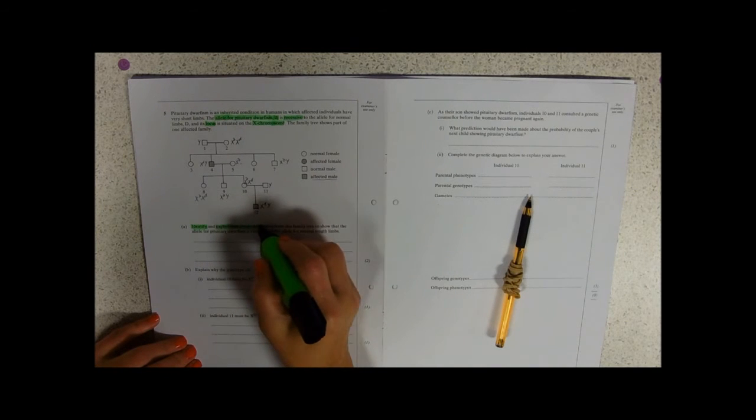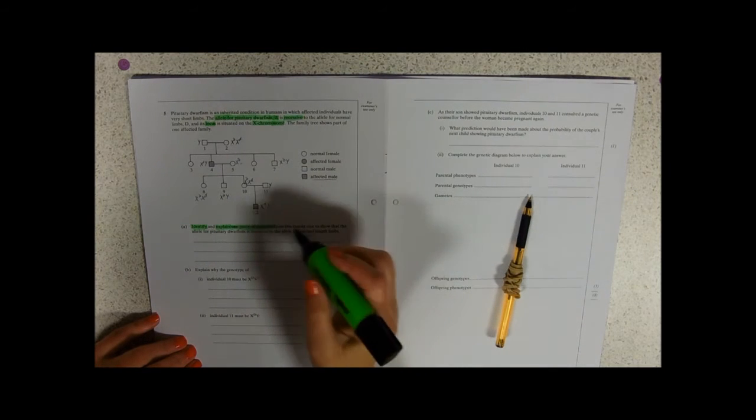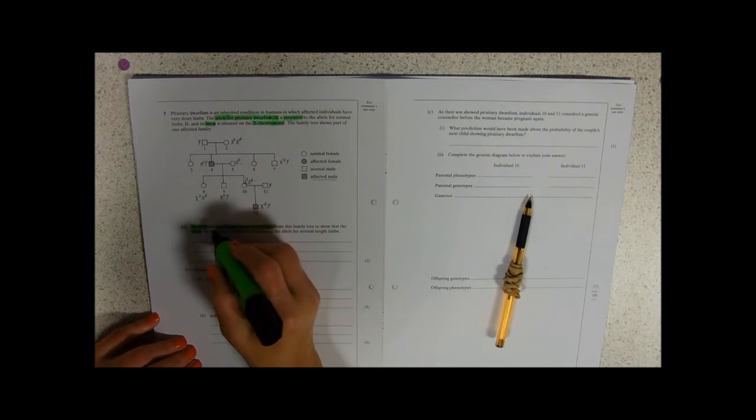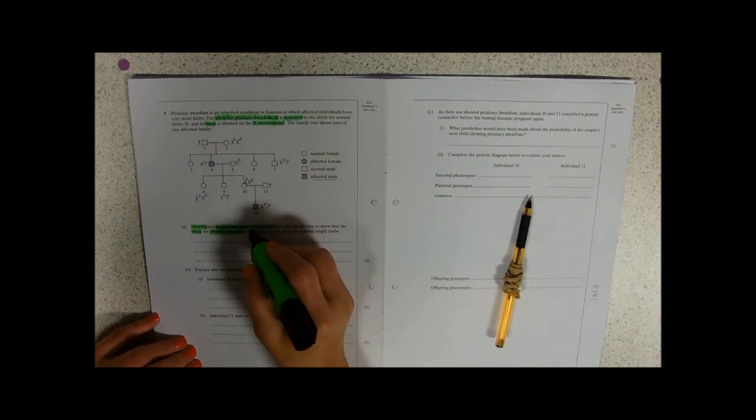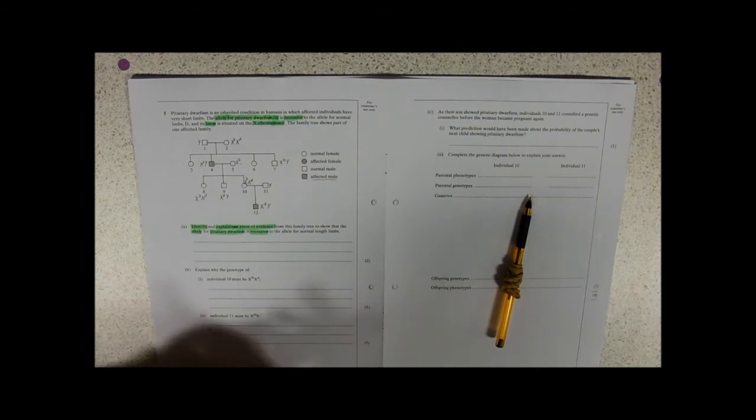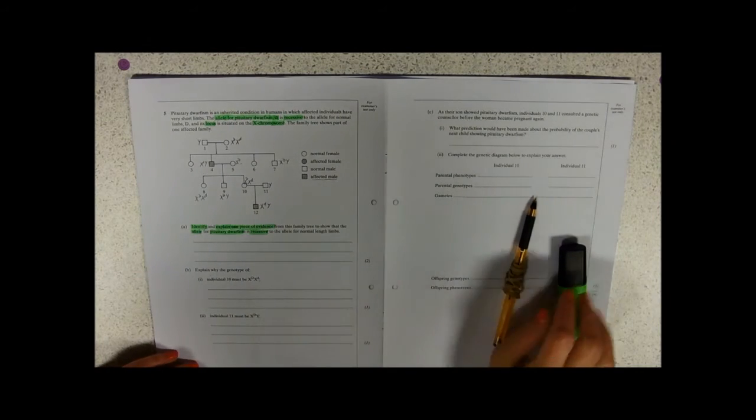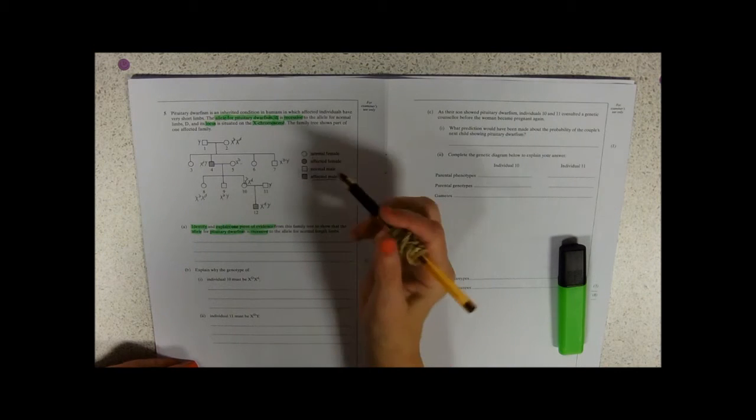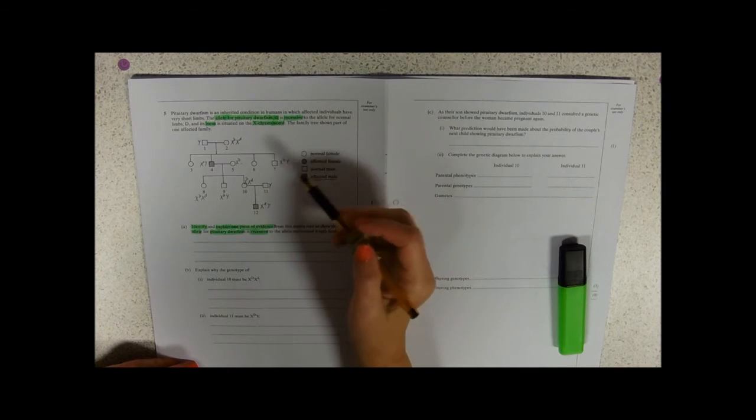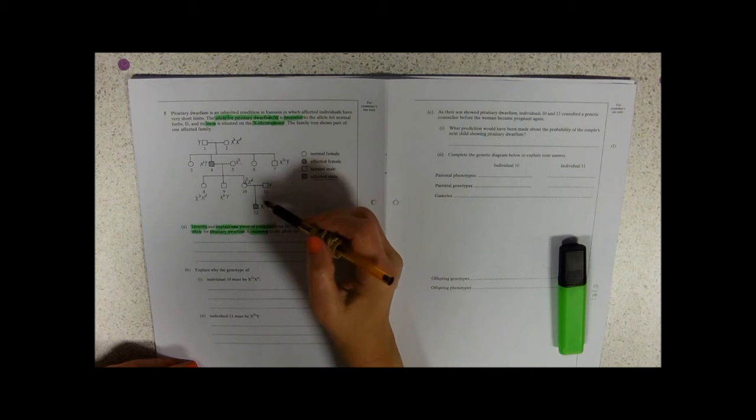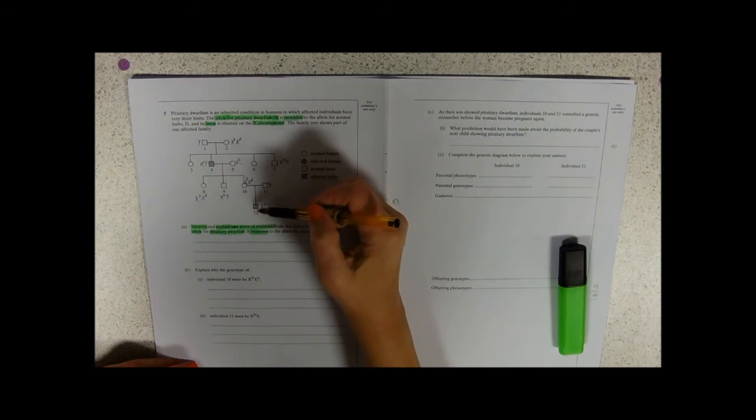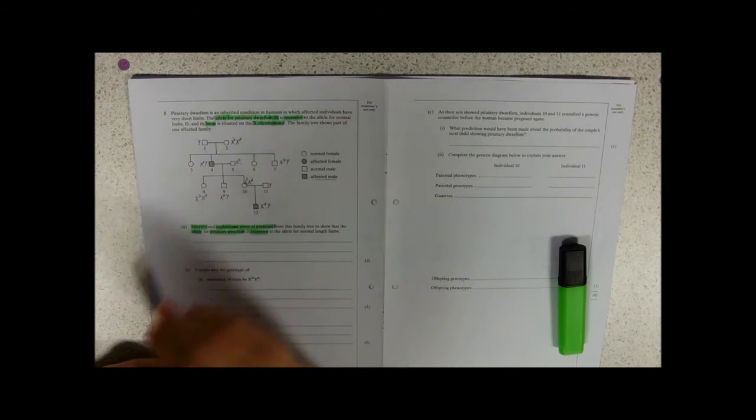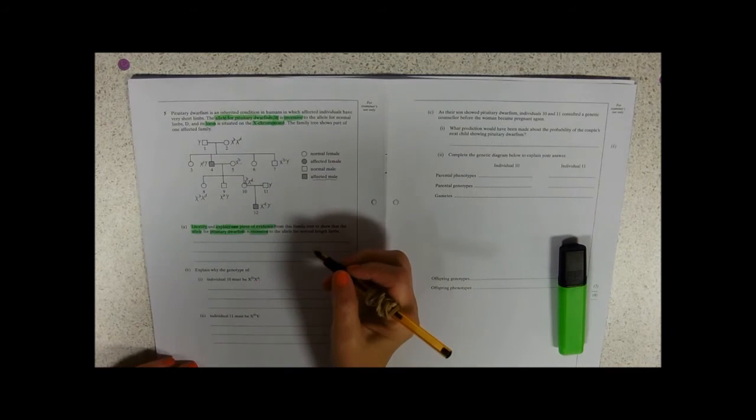One piece of evidence, we only need one, to show that the allele, the dwarfism, pituitary dwarfism, is recessive. So what's our evidence that it is recessive? So our evidence is here and here. We only need to use one of these couples. I'm going to start with couple number one and two.